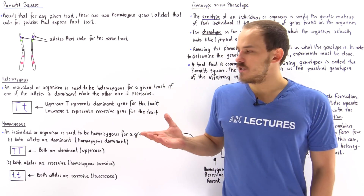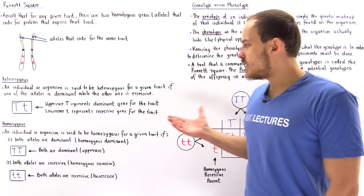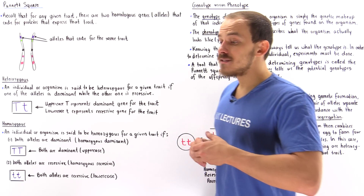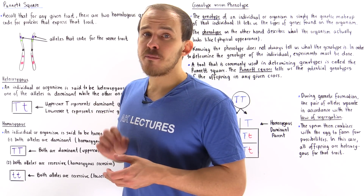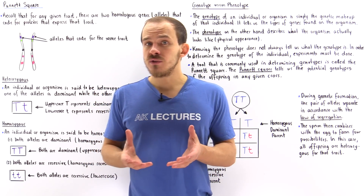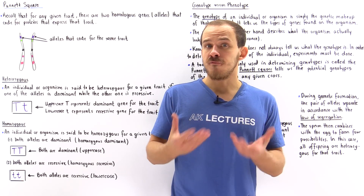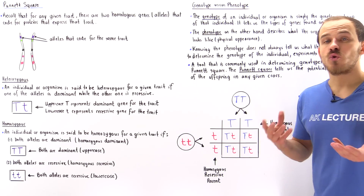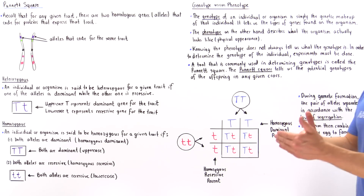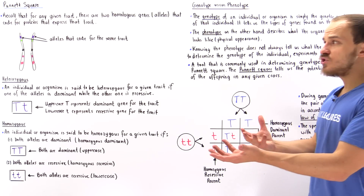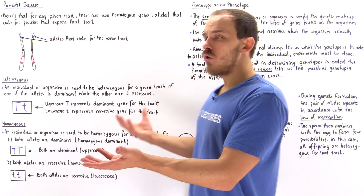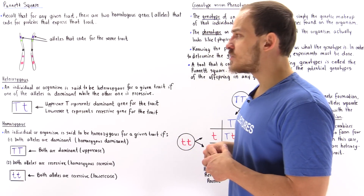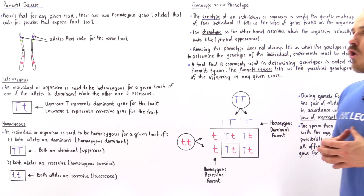A Punnett Square is a tool used in genetics that helps scientists uncover the potential possibilities of the genotypes of the offspring formed in some given mating or crossing process. So when we cross two individuals or two organisms, that simply means we mate those two organisms to produce some offspring.